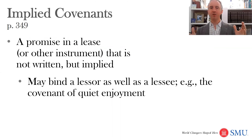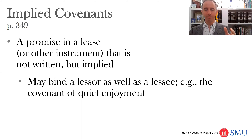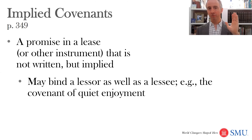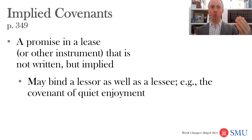There can be implied covenants that the lessor landowner has — for example, the covenant of quiet enjoyment. The lessor makes an implied promise they're not going to block the lessee oil and gas company from coming on the land. So the lessee oil and gas company enjoys that implied covenant that it will be able to get on the land and operate. The lessor has an implied covenant of quiet enjoyment that it owes to the lessee.